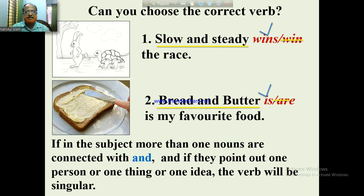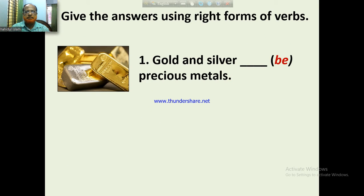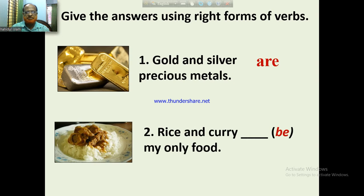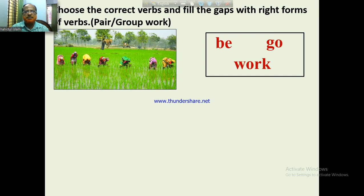Examples where 'and' connects items treated as one unit: slow and steady; bread and butter; gold and silver are precious metals; rice and curry is my only food.